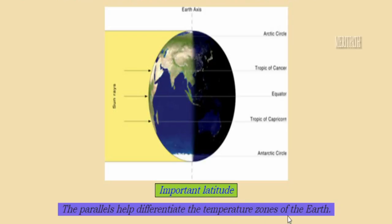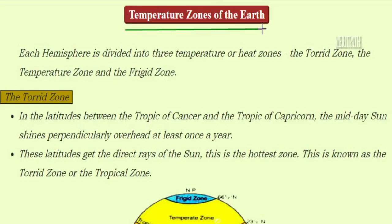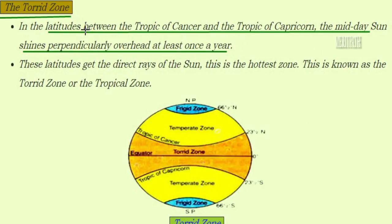These important parallels help us differentiate the temperature zones of the earth. Each hemisphere is divided into three temperature zones: the torrid zone, the temperate zone, and the frigid zone. The torrid zone lies between the Tropic of Cancer and the Tropic of Capricorn, where the midday sun shines perpendicularly overhead at least once a year. These latitudes receive direct rays of the sun and form the hottest zone, also known as the tropical zone.